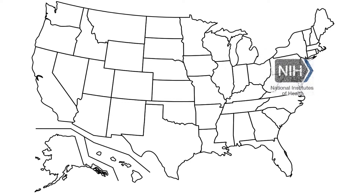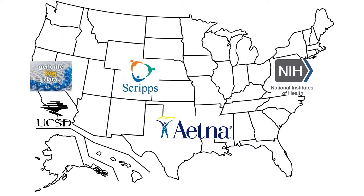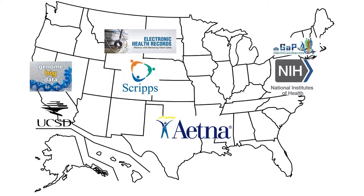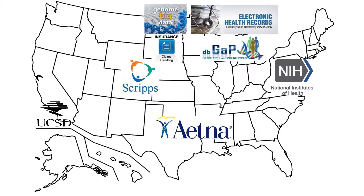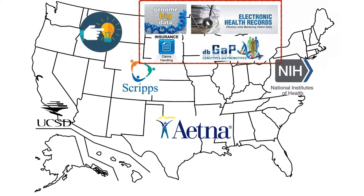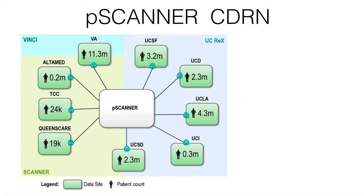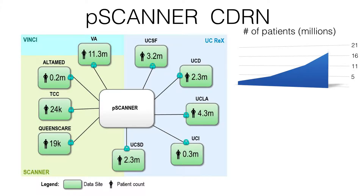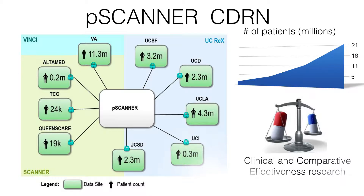For big data science, numerous organizations such as governmental agencies, universities, hospitals, and insurance companies collect various data at large-scale or real-time for research and business purposes. Healthcare data from different sources can be integrated to gain better insights and deliver highly customizable care to patients. For example, the PCORnet Clinical Data Research Network (CDRN) connects data from over 21 million patients in geographically distant institutions to facilitate clinical and comparative effectiveness research.